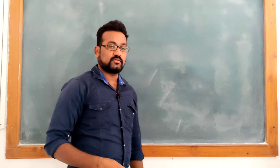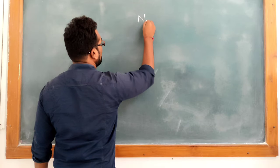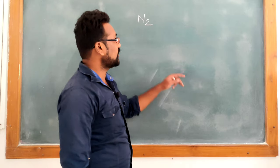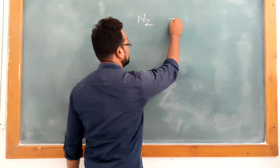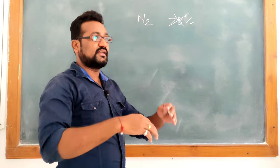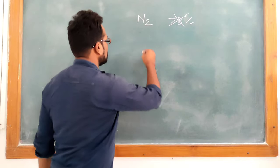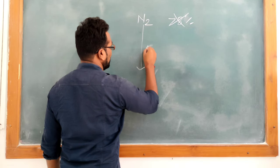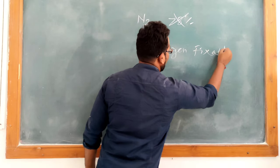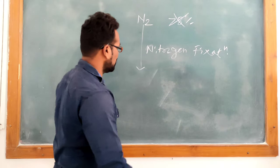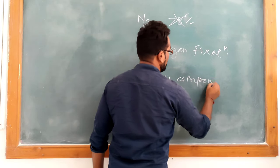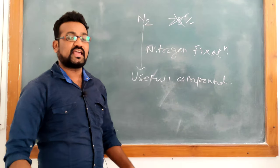First of all, you are very much aware about Nitrogen in the atmosphere which is present in the form of gas. The Nitrogen molecule contains 2 Nitrogen atoms. This Nitrogen is present at 78% in the atmosphere. But this Nitrogen is useless to the plant directly; it needs to be converted into useful forms with the help of Nitrogen fixation.